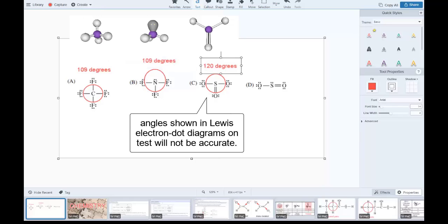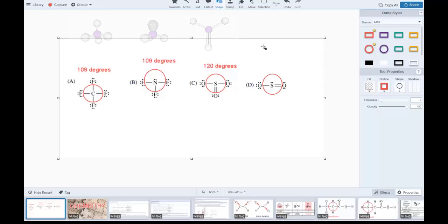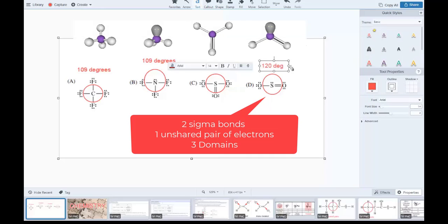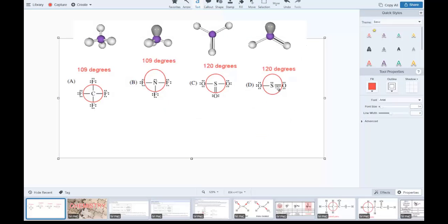For three electron domains with all three bonded, we have trigonal planar, a symmetrical molecule with 120 degrees. This Lewis dot diagram is misleading because the angles are wrong - you can't trust Lewis dot diagrams for angles. The actual angle is 120 degrees and they're all the same. Now for our third choice, we have three pairs of electrons with two bonded and one lone pair, ideally 120 degrees.